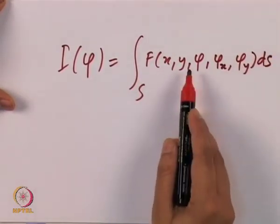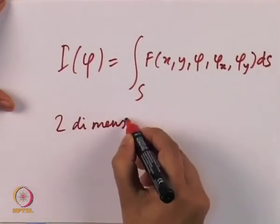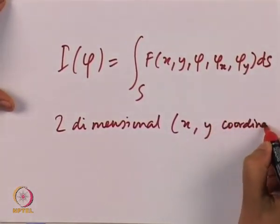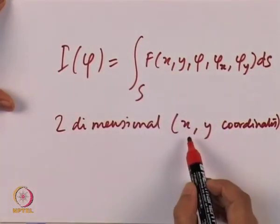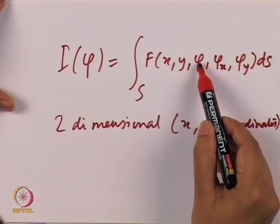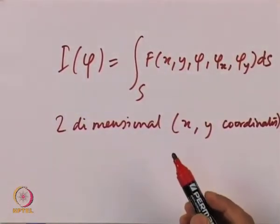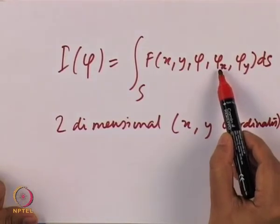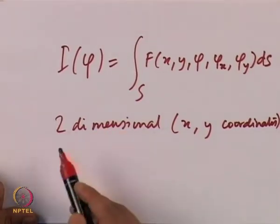Here we have a two-dimensional problem, so the domain is a two-dimensional domain with x and y coordinates. The unknown function φ varies as a function of x and y, and the action principle is a function of x, y, φ, and the partial derivatives with respect to x and y, given by this integral equation. Our objective is to minimize this particular integral.